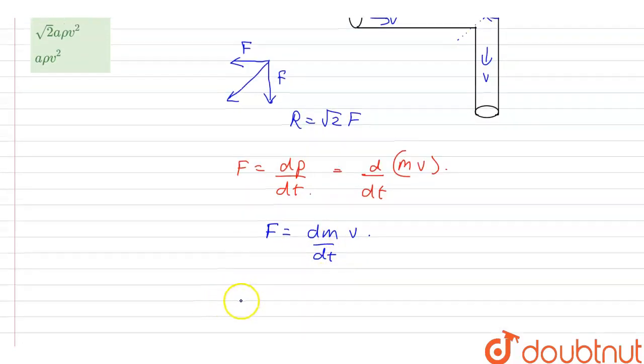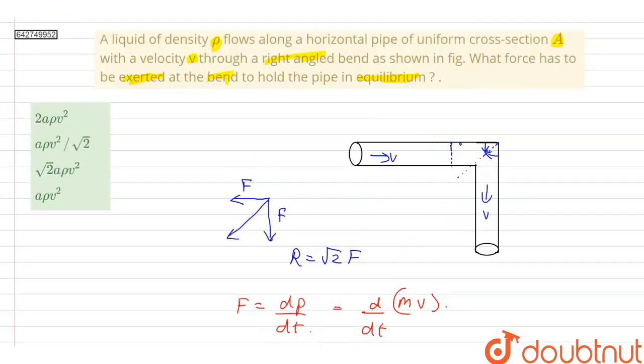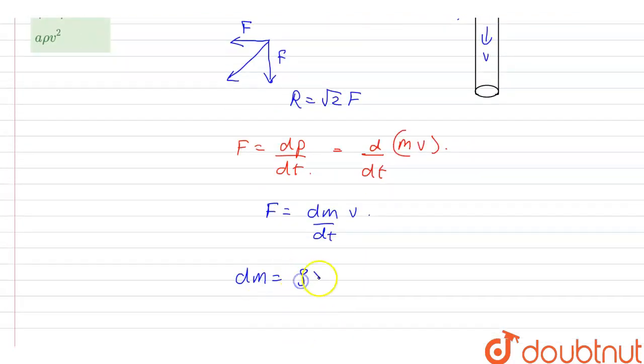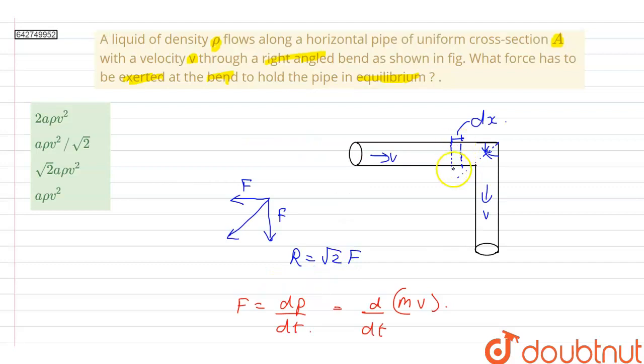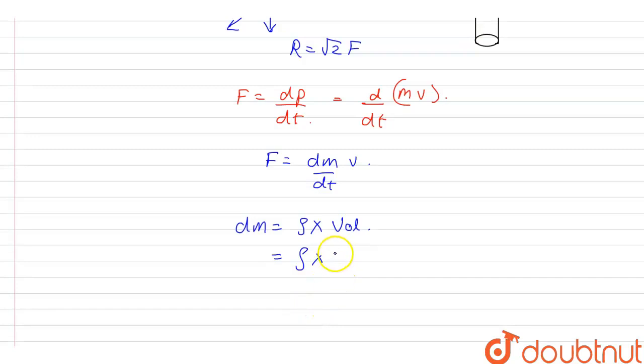So let us find out dm. dm will be equal to, if I take a small element of this pipe of length dx, this length is dx. So I can write mass will be equal to density times the volume. And here volume will be equal to this cross-sectional area A of the pipe multiplied by this length dx. So this will be equal to A times dx. Therefore, dm will be equal to ρA dx.